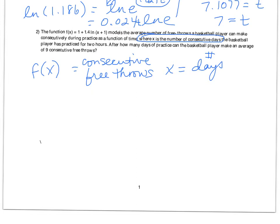So now I have to figure out what they're asking for. After how many days of practice? So they want x. They want to know how many days. And they've given you how many consecutive free throws. That's 9. So they gave you f of x. You're trying to find x. So your equation sets up like this. 9 equals 1 plus 1.4 times the natural log of x plus 1.